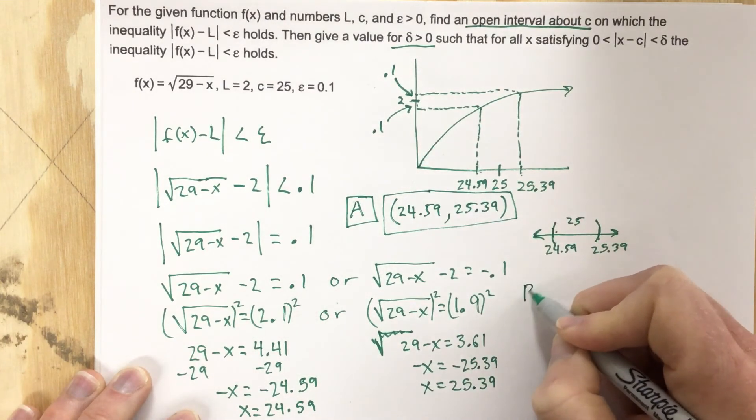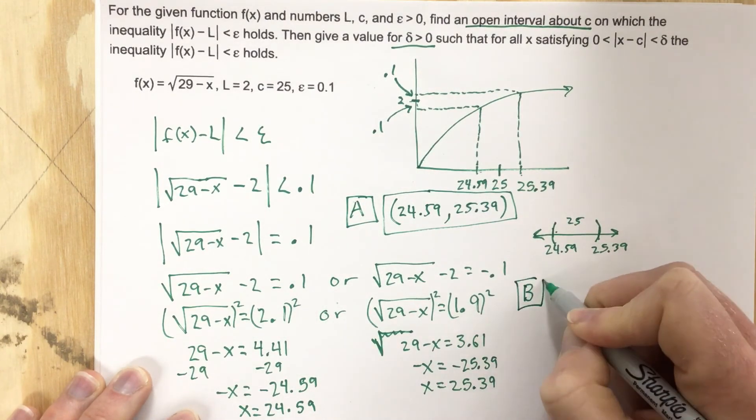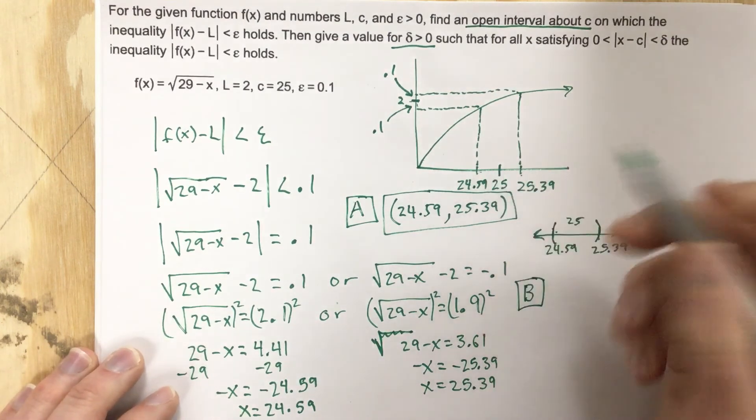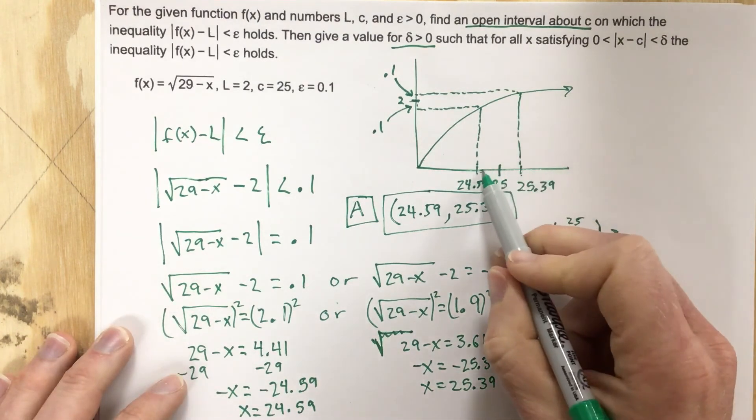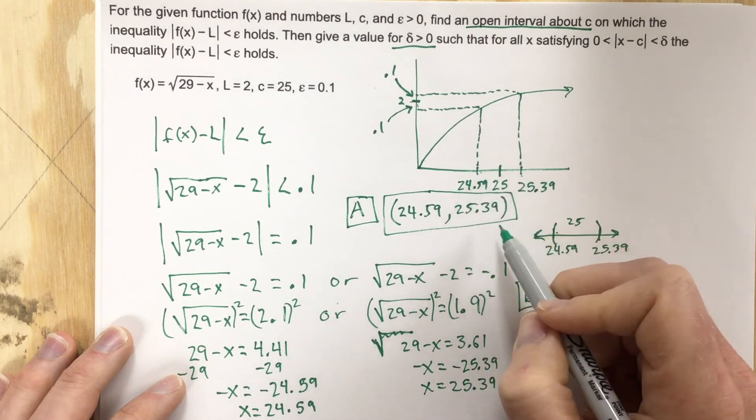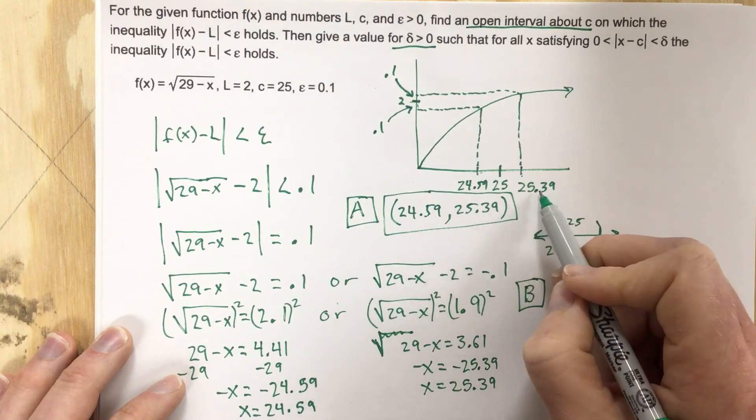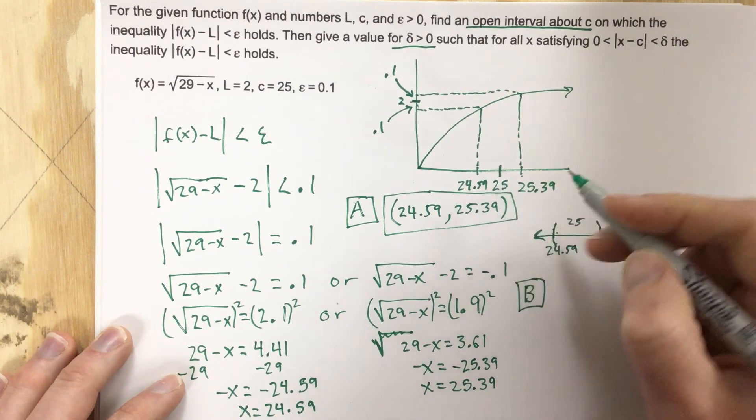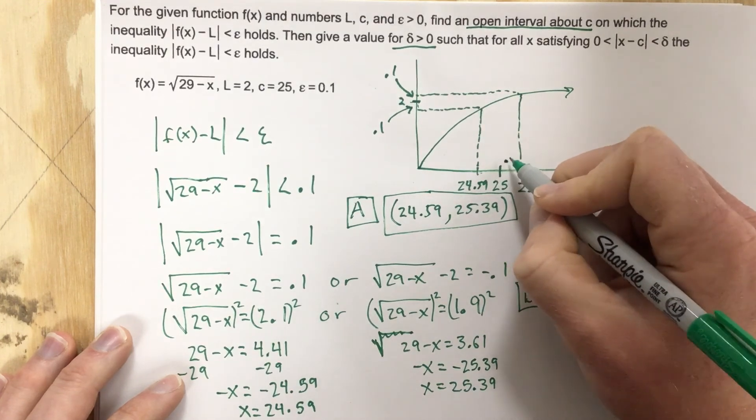But what will our delta be? Well, here's the key. We need to pick the smallest delta value between these gaps. Now, these gaps aren't the same. So what's 25.39 - 25? Well, that's 0.39. So our gap here is 0.39.